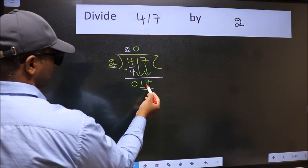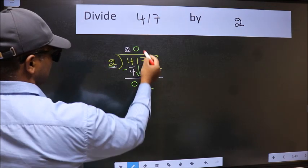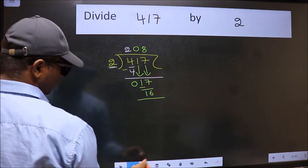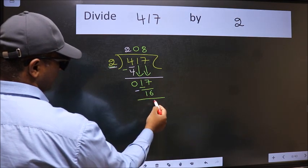Now 17. A number close to 17 in the 2 table is 2 times 8 equals 16. Now we should subtract. We get 1.